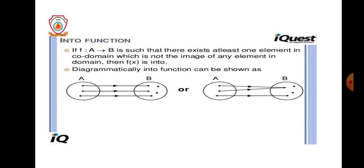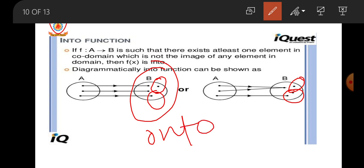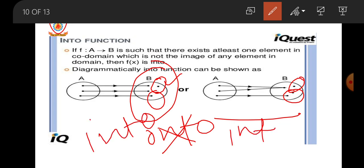Into function is such that there exists at least one element in the co-domain which is not the image of any element in the domain. Diagrammatically, in set B there are elements which have no pre-image — this is exactly opposite to the onto function. In onto, every element has a pre-image; in into, at least one element has no pre-image. Both examples shown are into but not onto functions.